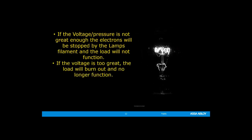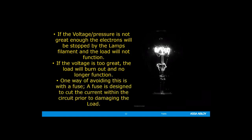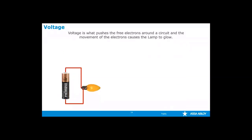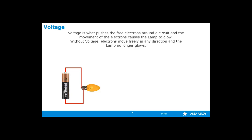One way to avoid this is with a fuse. A fuse is designed to cut the current within a circuit prior to causing any damage to the load. Voltage is what pushes the free electrons within a circuit and moves the electrons and causes the lamp to glow. Without voltage, electrons within a wire will move freely in any direction because there's nothing pushing them, and the lamp will no longer glow.